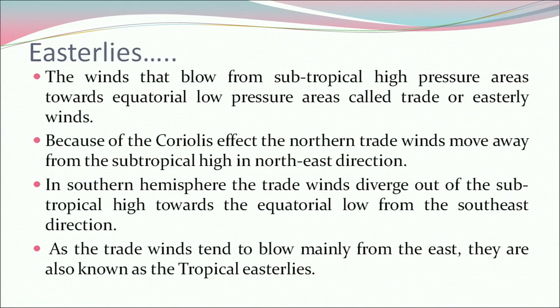The winds that blow from subtropical high pressure areas towards equatorial low pressure areas are called trade or easterly winds. Because of the Coriolis effect, the northern trade winds move away from the subtropical high in the northeast direction. In the southern hemisphere, the trade winds diverge out of the subtropical high towards the equatorial low from the southeast direction. As the trade winds tend to blow mainly from the east, they are also known as the tropical easterlies.